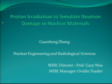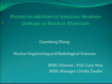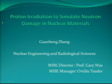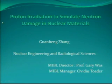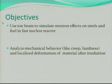My project is to use proton irradiation to simulate neutron damage in nuclear materials. For traditional nuclear plants, the thermal neutron inside the PWR is less than 1 eV. But for next-generation nuclear reactors, especially fast reactors, the kinetic energy of the fast neutron is approximately 1 MeV. Besides, the next nuclear plants will operate under high temperature, dose rate, and pressure. So the objective of this project is to use an ion beam to simulate the neutron effect on steel in the fast nuclear reactor.